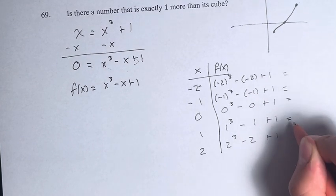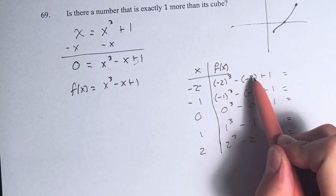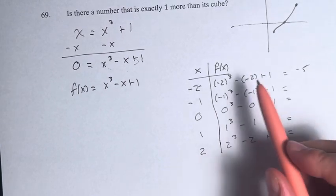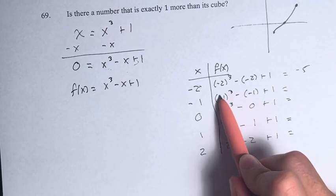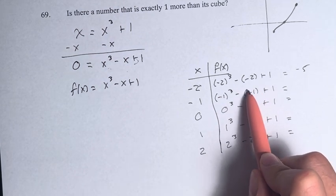What do these all equal? Negative two cubed is negative eight. Minus negative two is plus two, which is negative six. Plus one is negative five. Negative one cubed is negative one. Plus one is zero. Plus another one is one.